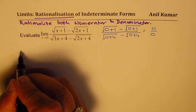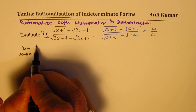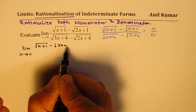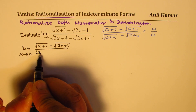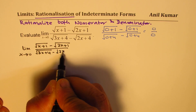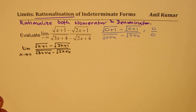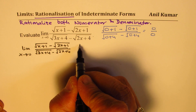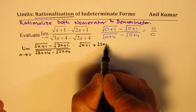We are given: limit as x approaches 0 of square root of (x plus 1) minus square root of (2x plus 1), divided by square root of (3x plus 4) minus square root of (2x plus 4). To rationalize the numerator, I have to multiply and divide by the conjugate of the numerator, which is square root of (x plus 1) plus square root of (2x plus 1).